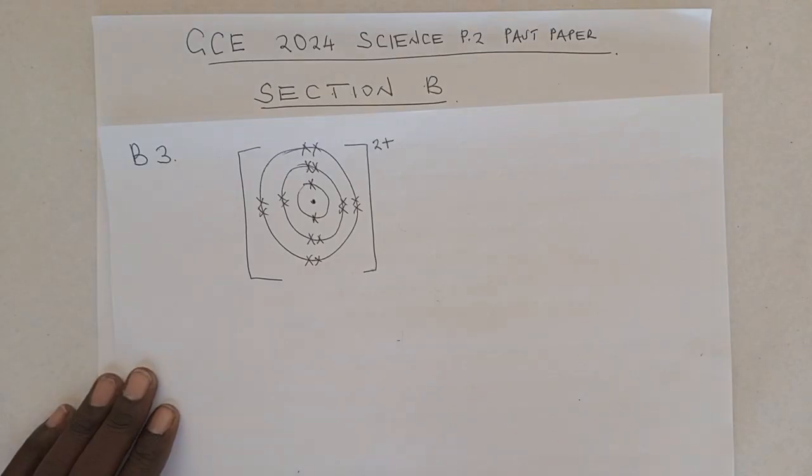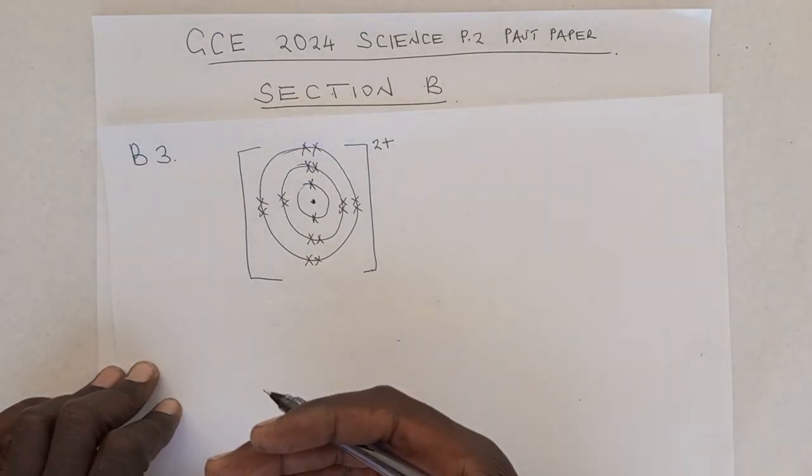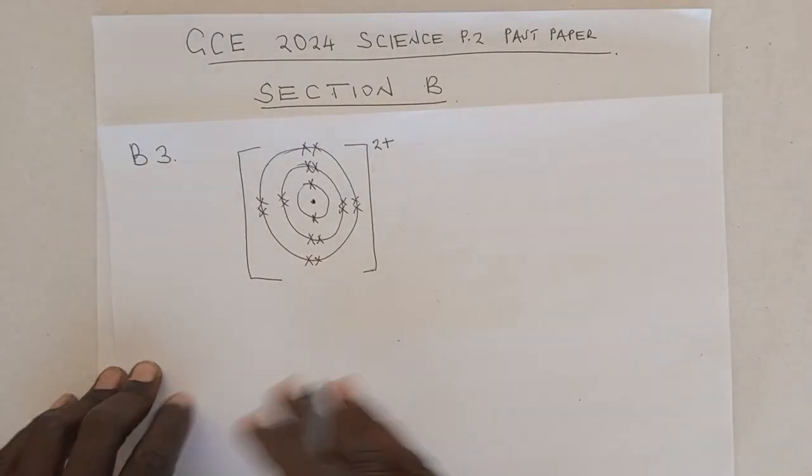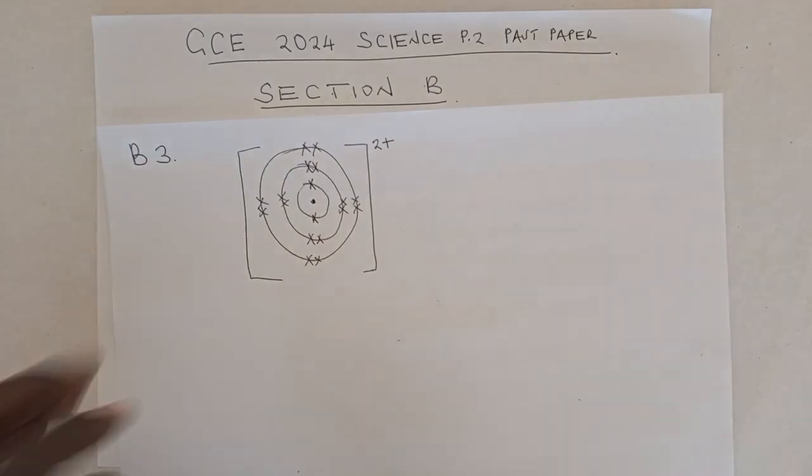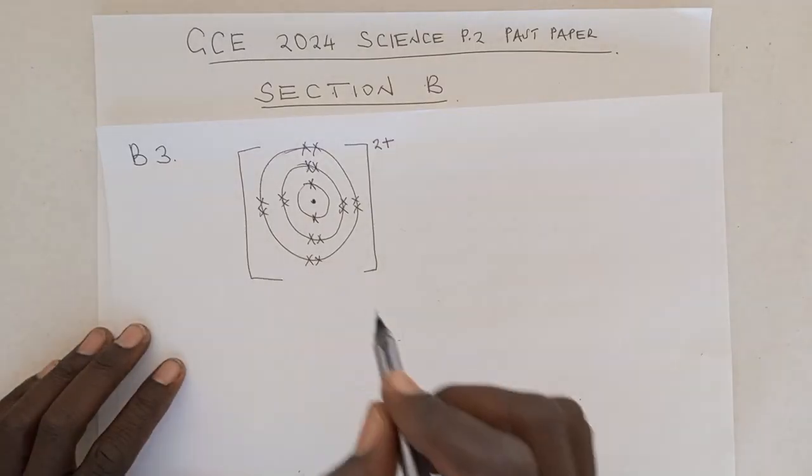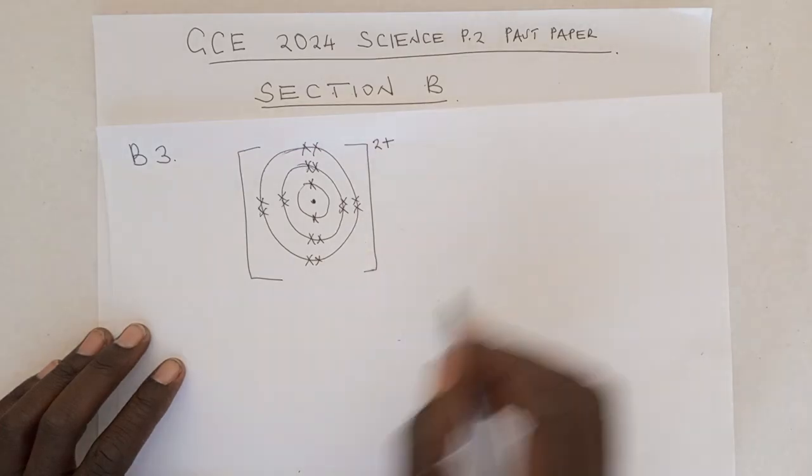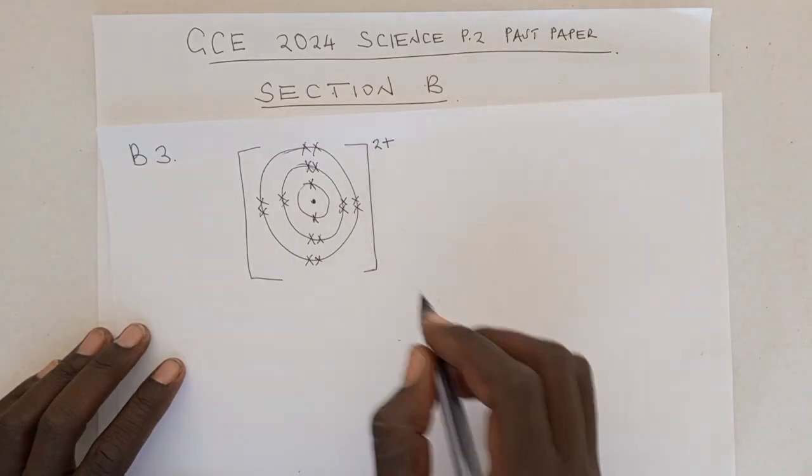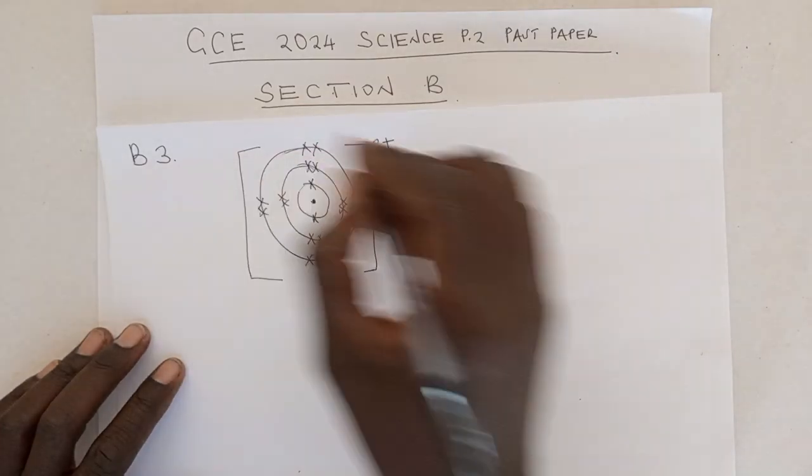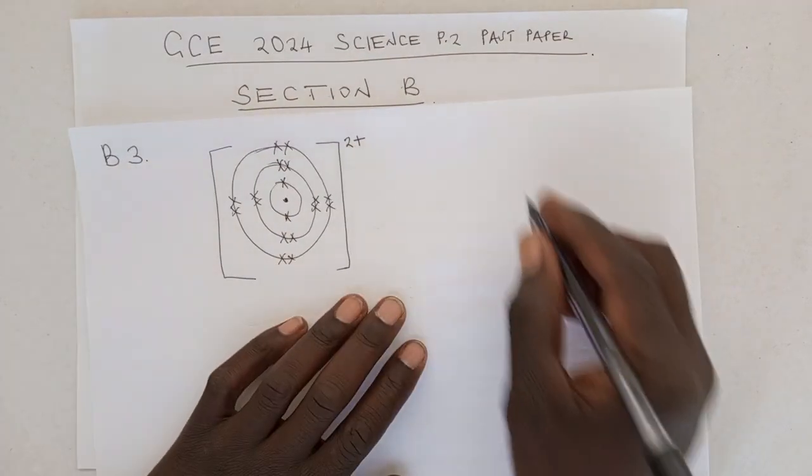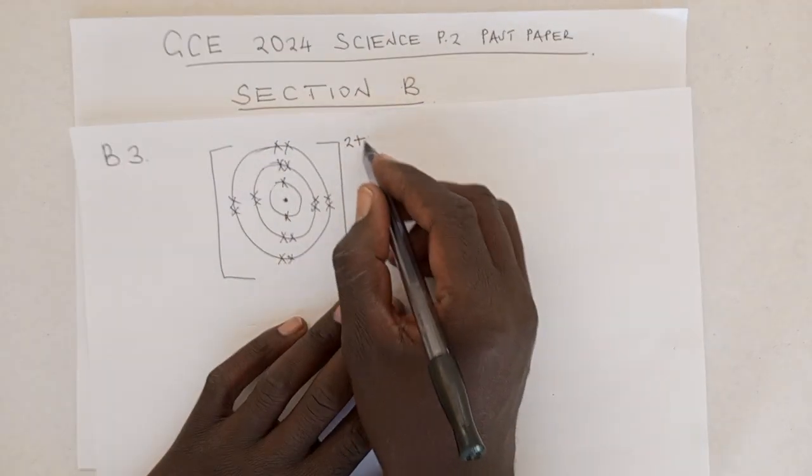And then we have a 2 plus here. So this is an ion because it is charged. So now, this ion is charged. It simply means that at some point before it got charged or before it lost electrons, it was neutral. It was an atom. At this point it is an ion.